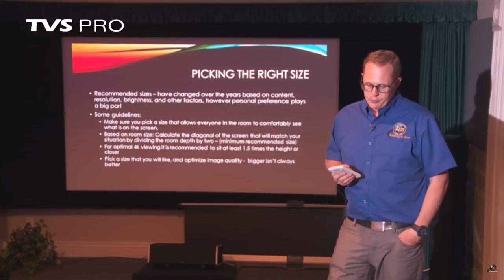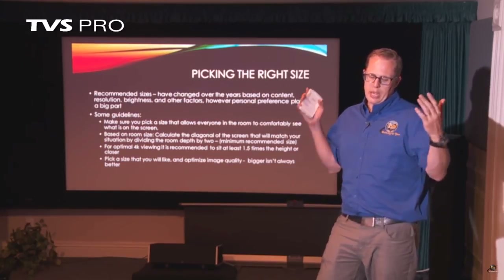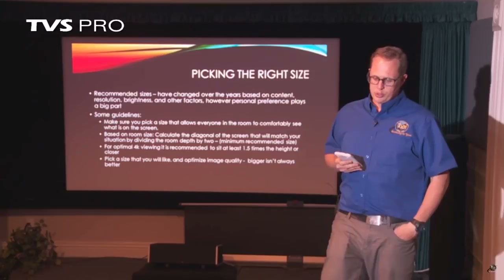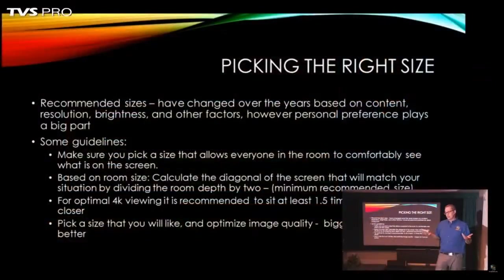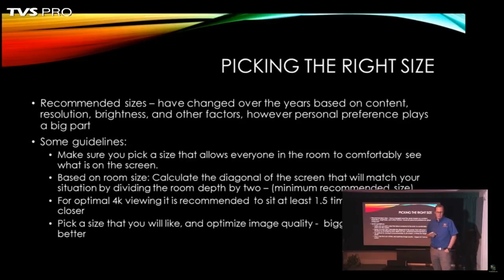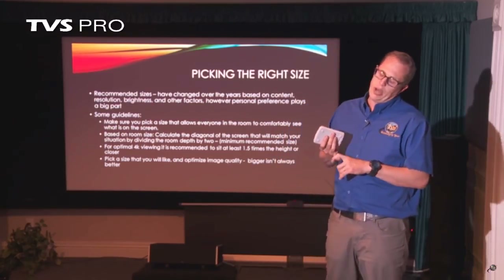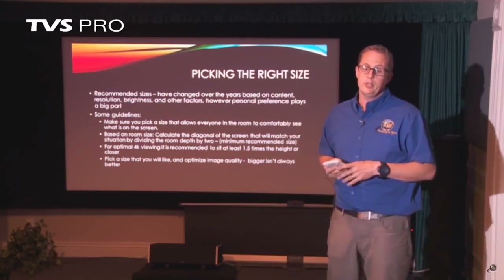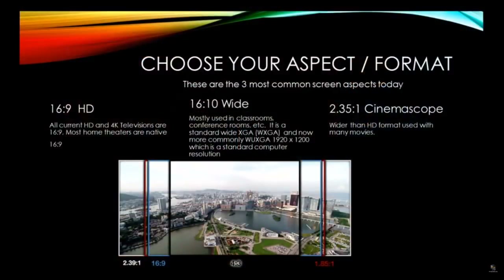Bigger is not always better. One easy way to calculate screen diagonal is to take the depth of the room and divide it by two — that gives you a ballpark minimum recommended size, and most people want to go a little larger than that. For 4K, the optimum viewing distance is sitting at least one and a half times the height of the image — or even closer — to really take advantage of and see the difference in resolution that 4K has to offer. You want to pick a size that optimizes image quality both for resolution and for brightness.